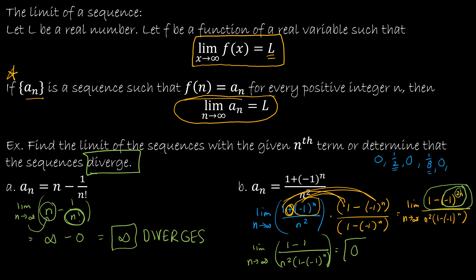So this has a limit of 0, which means of course that this converges. And that makes perfect sense, because I have 1 half, then 1 eighth, and my best guess is the next ones will be something like 1/16th or 1/32nd. I can see that value is going to get smaller and smaller and approach 0, so this limit of 0 makes perfect sense.